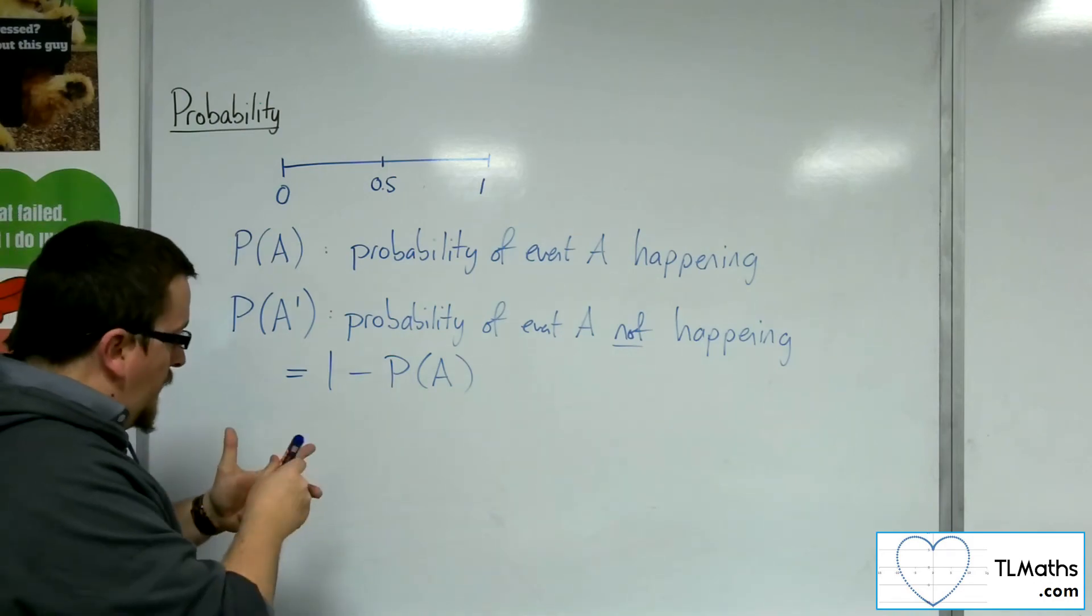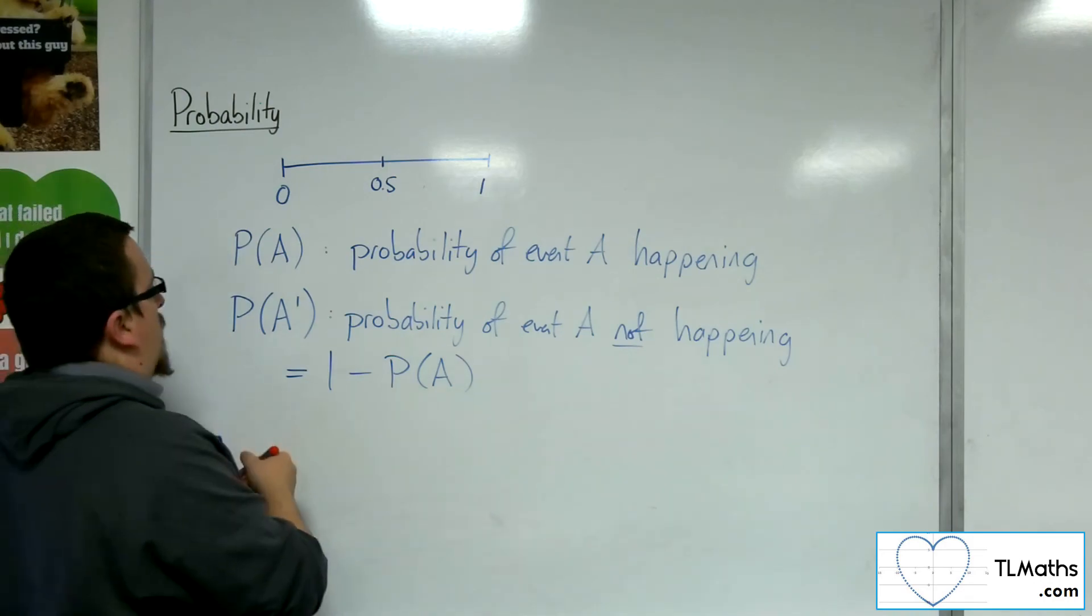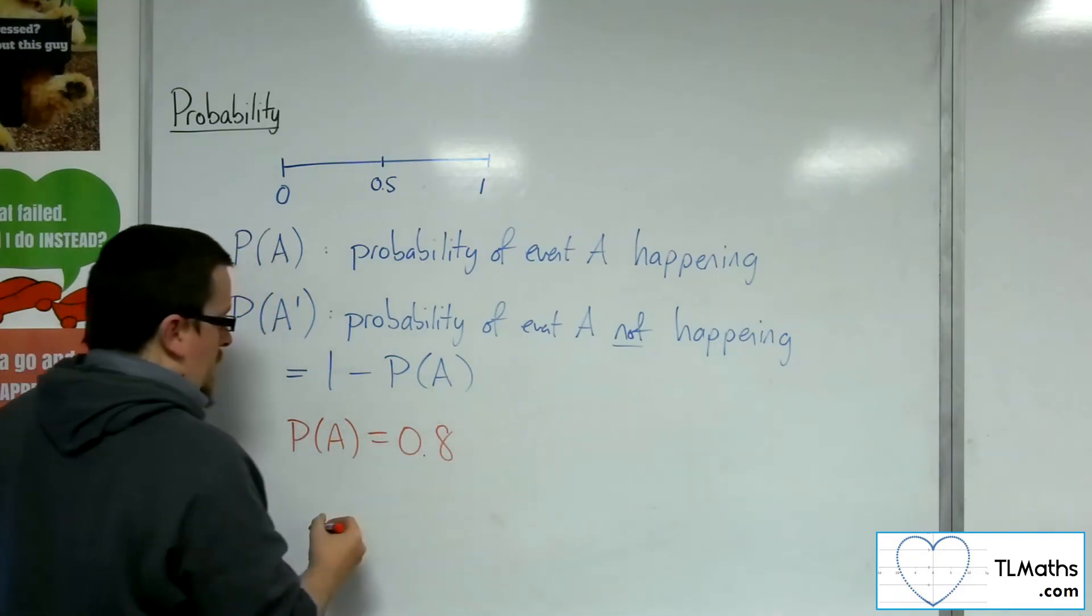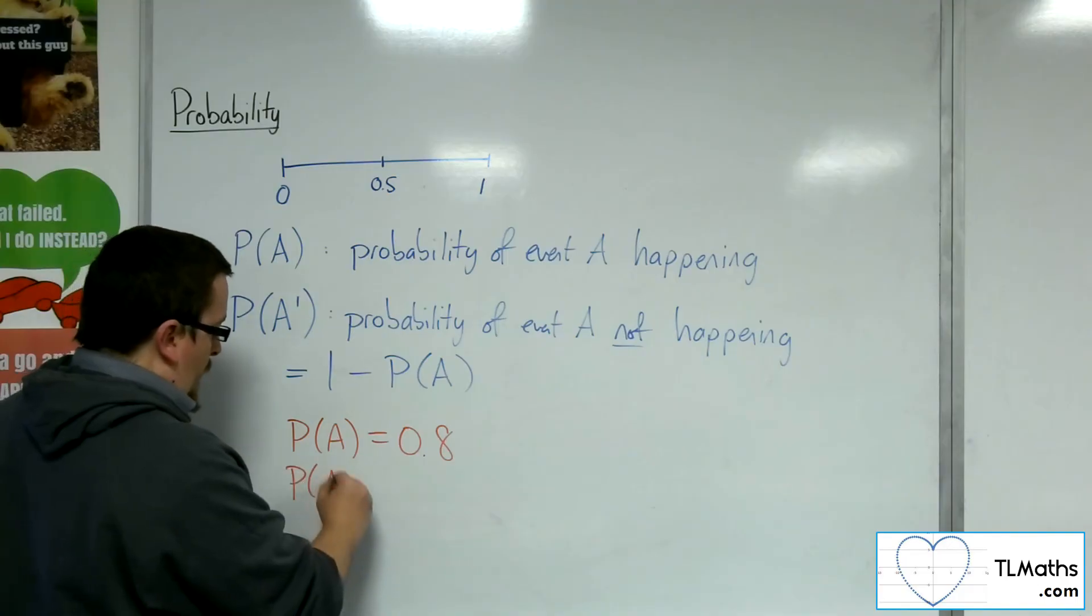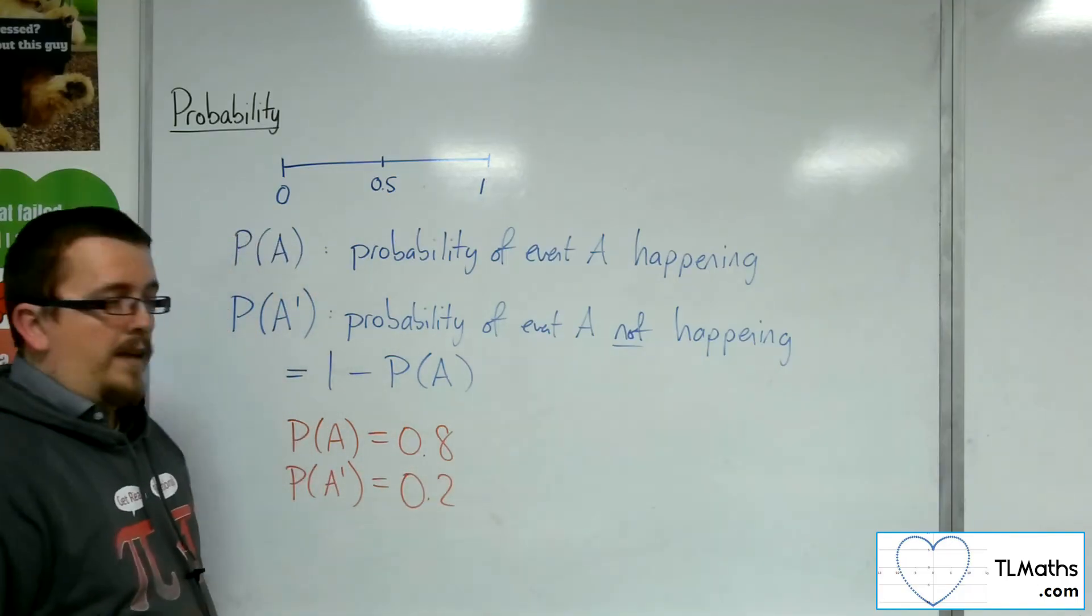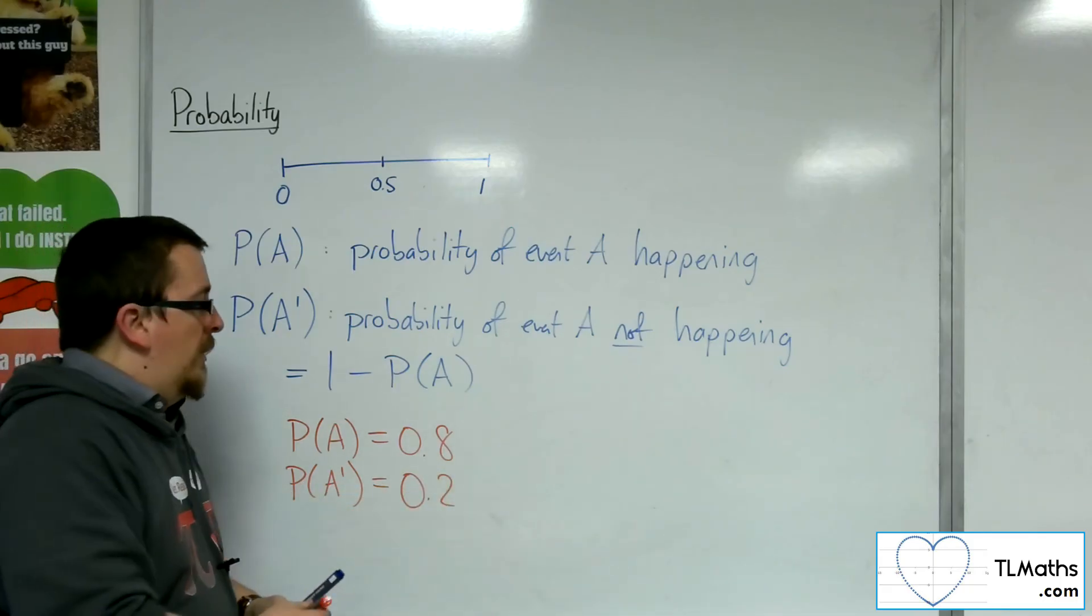So if, for example, the probability of A is 0.8, then I know that the probability of A not happening is 0.2. These two must add up to 1.